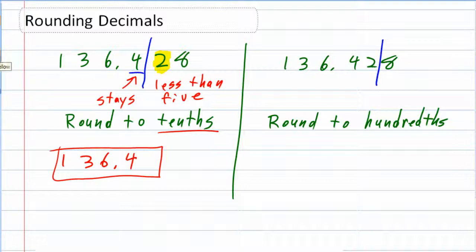Same process. I look at the digit behind the 2. Again, I'm looking at this one because the 2 is in the hundredths place. So this time, I have an 8.